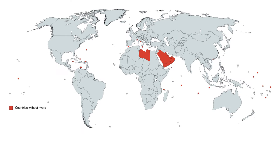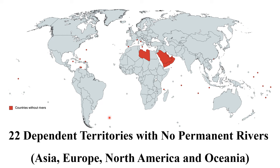In addition to independent countries, some dependent territories also have no rivers. There are 22 dependent territories with no permanent rivers, found in Asia, Europe, North America, and Oceania. The majority of the dependent territories with no rivers are found in North America and Oceania.